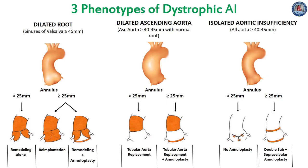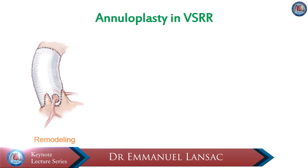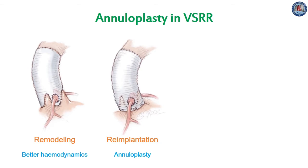Two operations have been described to replace the aortic root whilst preserving the native aortic valve. Yacoub described a remodeling technique whereby a tube graft was modified to create three scallops or neosinuses, which are sutured to the aortic wall directly adjacent to the cusp insertion points. This allows the root to expand during systole through the interleaflet triangles. David described the re-implantation technique where the aortic valve is contained within a tube graft. Both techniques treat the dilation of the sinotubular junction by bringing the commissure to the diameter of the tube.